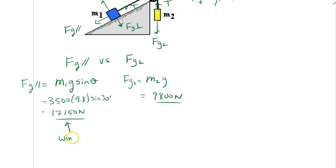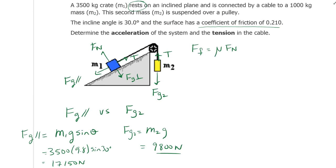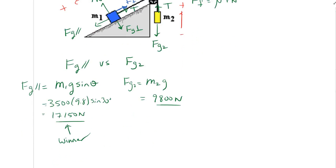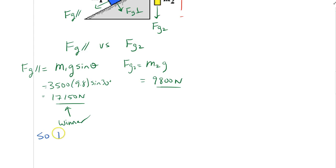So the acceleration is going to be down the incline — Fg parallel's direction is positive and the opposite is negative. Once it starts moving, friction will oppose the motion, so friction will be going up the incline — in the same direction as the tension force.